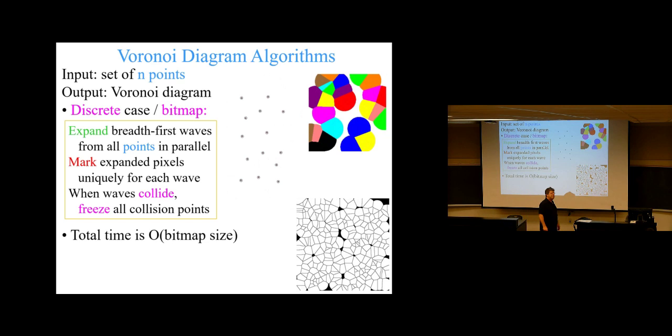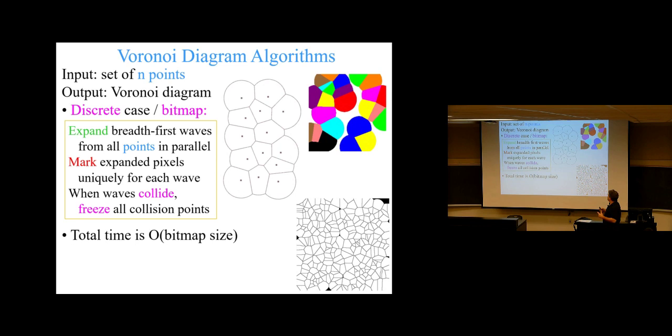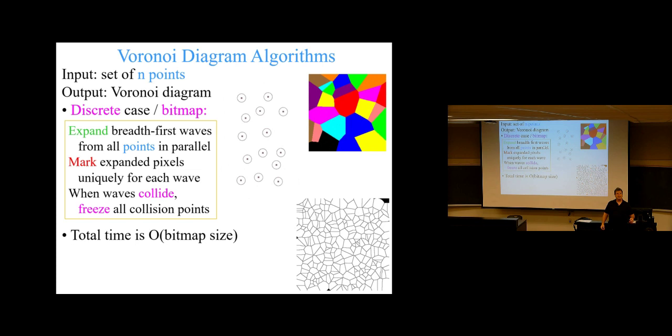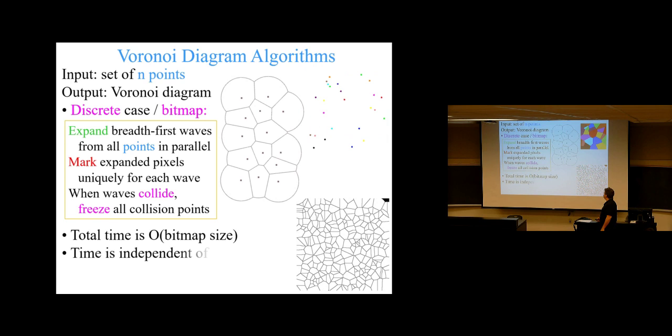How many get this approach? It's pretty straightforward: expanding wave fronts, and when they collide, they freeze. The issue is that the total time is the size of the bitmap itself. So if you have a million-by-million bitmap, the time will be roughly a million squared — just to initialize all the storage will take that long. It's roughly linear in the bitmap size.